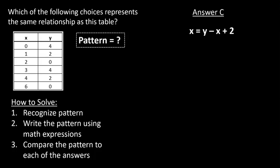Again, we choose 0 and 4. X equals 0, Y equals 4. And we see that it gives us 0 equals 6. That is obviously incorrect, so C is incorrect.